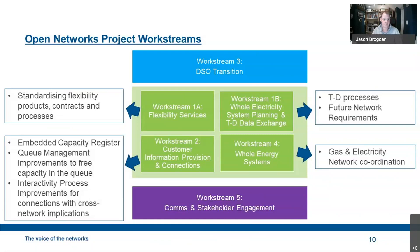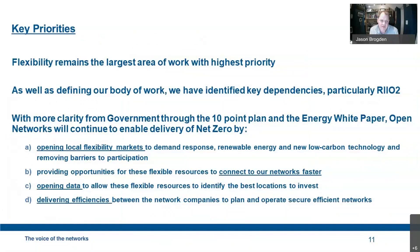Flexibility remains the largest area of work with the highest priority. We want to open markets and introduce standardization for customers so they can realize value, which meets network operator objectives, regulatory objectives, and government and consumer objectives, because it helps build the pathway to net zero. Flexibility is maybe up to half of our work this year, whereas last year it was probably about 25%, and the year before we were just starting to think about it. That's come to the fore very recently because of these market opportunities and the driver to effective investment planning.